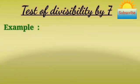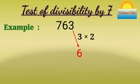Consider the number 763. Multiply 3 by 2. 3 times 2 equals 6.